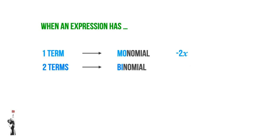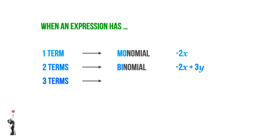If an expression has three terms, we call it a trinomial, for three. So we can have negative 2X plus 3Y plus 7. We notice that 7, even though it doesn't have a variable, is still a term — we call that a constant.